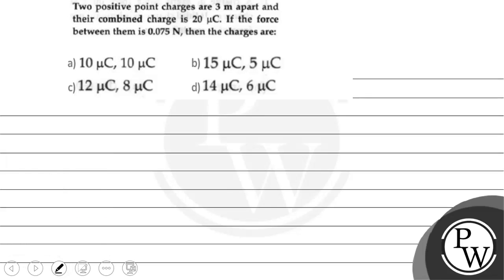Hello, let's read the question. The question says that two positive point charges are 3 meter apart and their combined charge is 20 microcoulomb. If the force between them is 0.075 Newton, then the charges are.